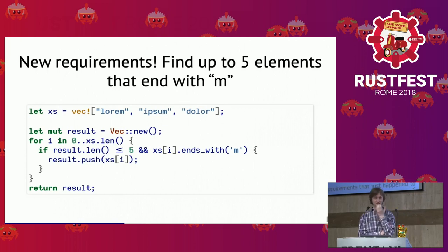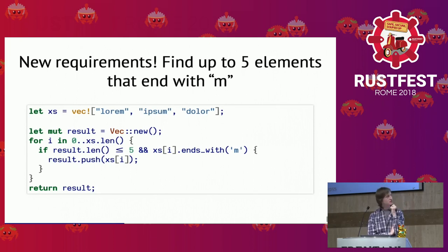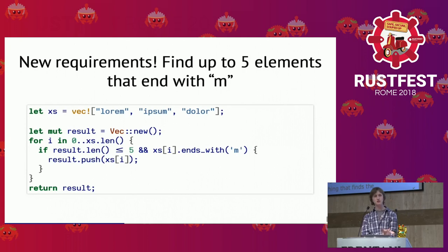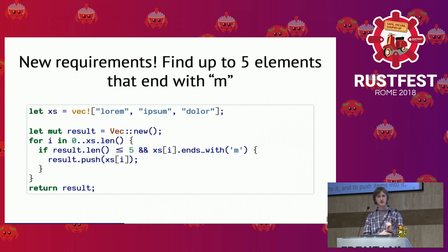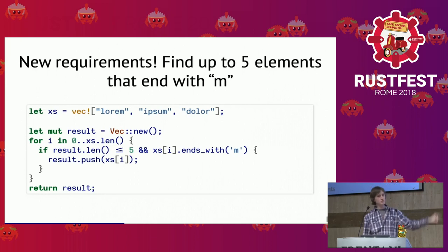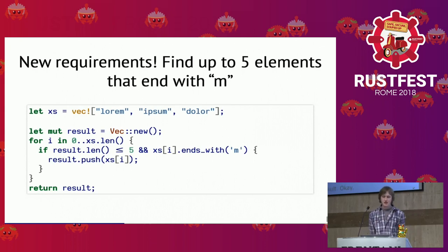This is still easy to reason about — code that fits on its slide, you can read it and know what's going on. But there are nuances: the very important piece is the 'five' and the 'less than or equal,' which is right in the middle of the loop and not immediately visible. The five — the new requirement — is buried and not obvious.